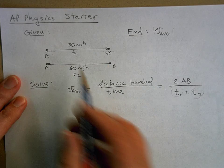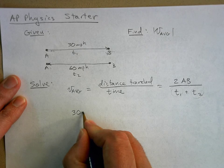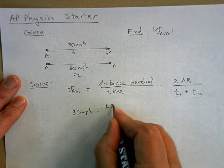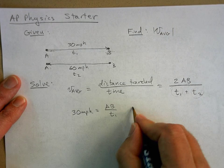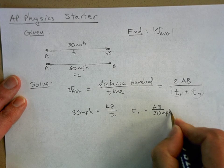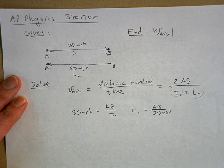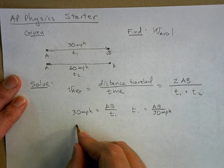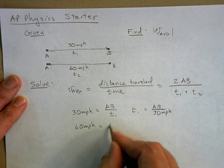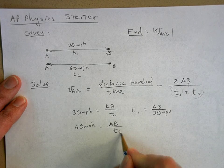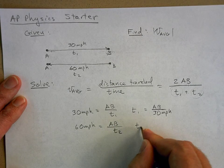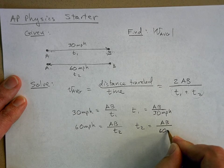So what is T1? We know that 30 miles per hour equals the distance traveled from here to here over T1, so T1 equals AB over 30 miles per hour. And from here to here is 60 miles per hour, and that distance is BA, but we can call it AB over T2. So T2 equals AB over 60 miles per hour. Now I've got expressions that I can substitute back in.